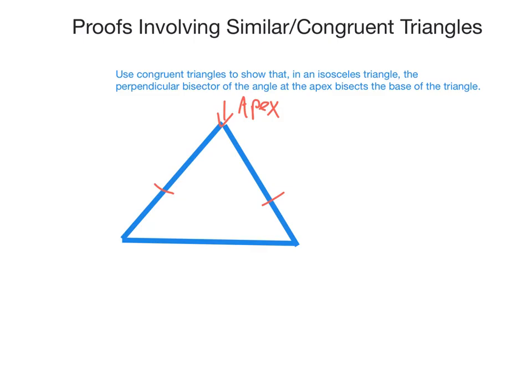I need to draw a line that bisects the angle at this apex. This is the bisector. I'm also told in the question that it is the perpendicular bisector, so that means this angle here and this angle here are 90 degrees. The question is asking me to show that this black line bisects the base of the isosceles triangle — essentially to show that this line here equals that line there.